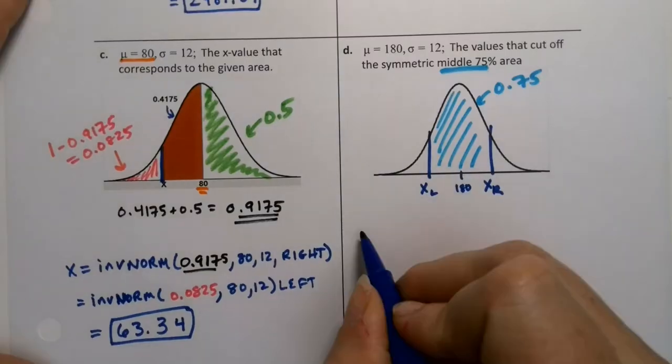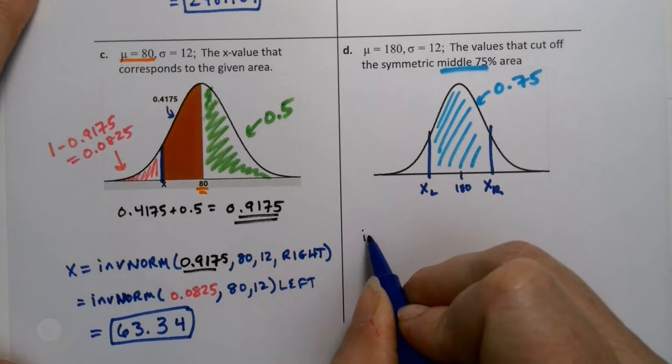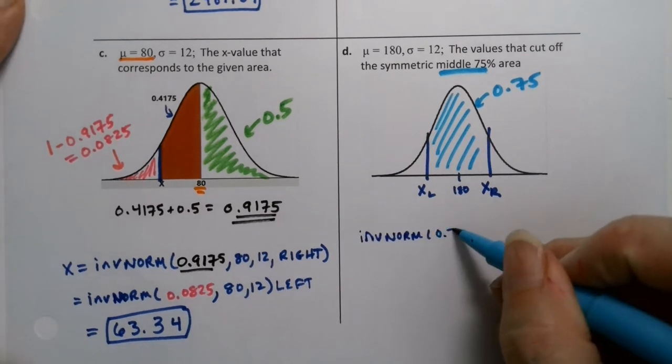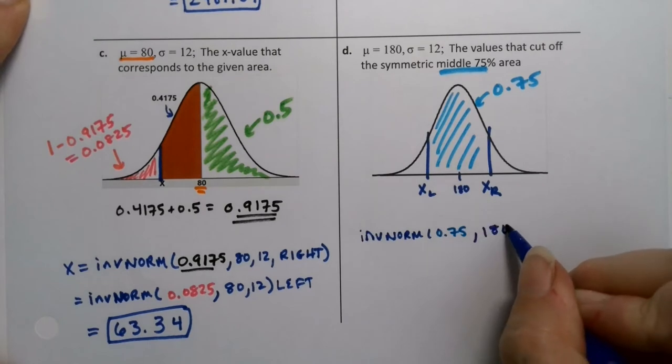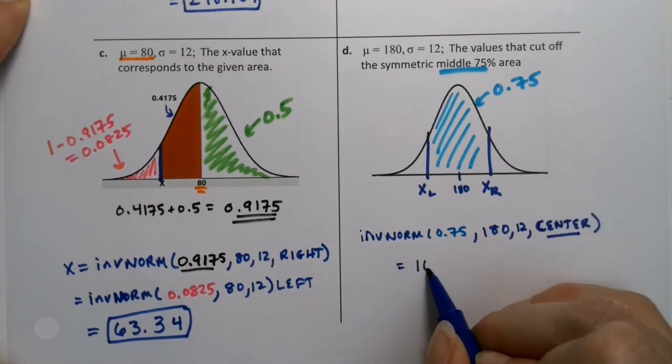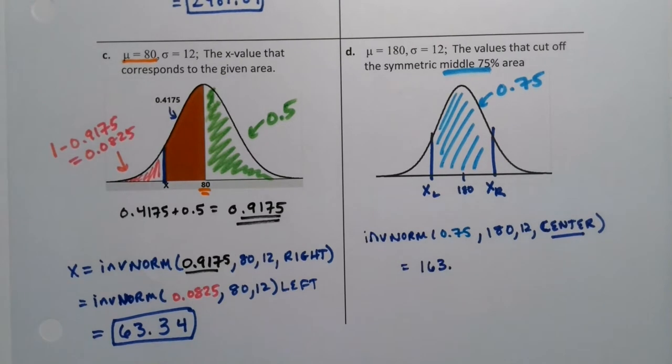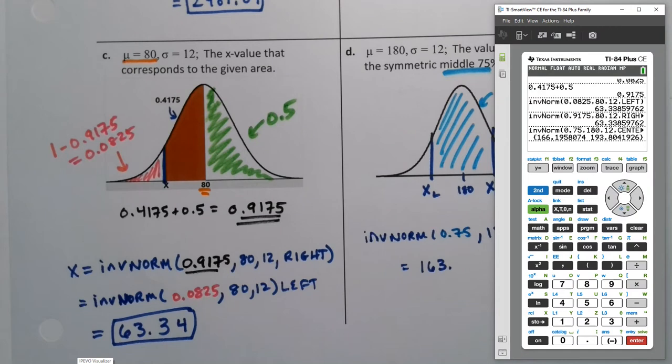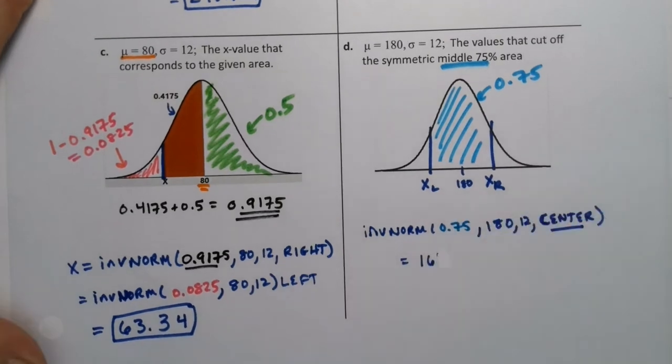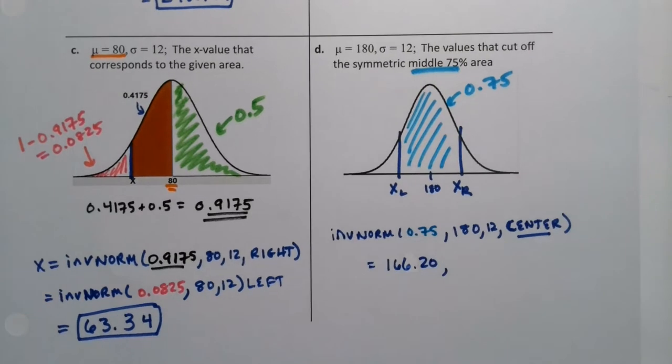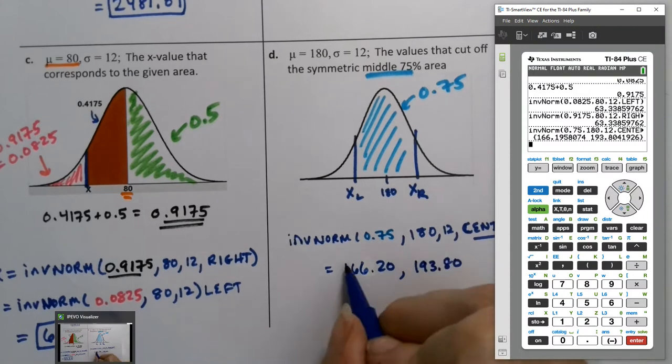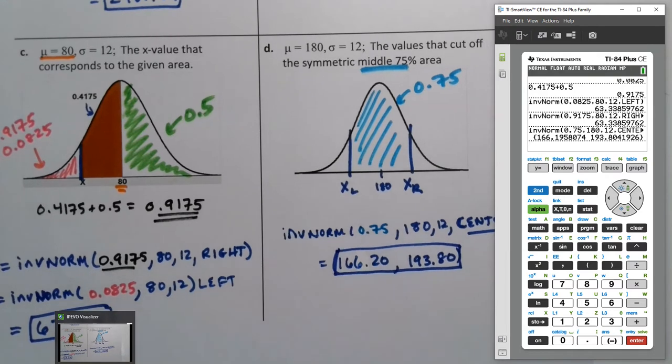New calculator and StatCrunch. So if you have a newer calculator, you can say inverse norm, 0.75, 180, and 12, and center. And it just tells you the numbers. It's 163 point, oh, I can't remember what they are now. 160, oh, 166 point, if you rounded two decimal places, that would actually round to 20. 166.20 and 193.80. There they are. StatCrunch will give them to you that easily also.